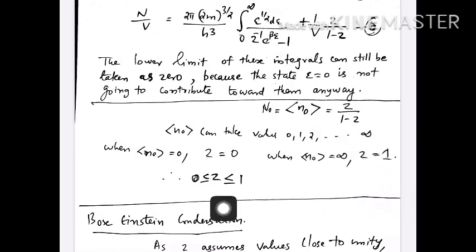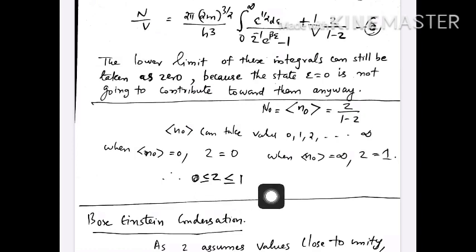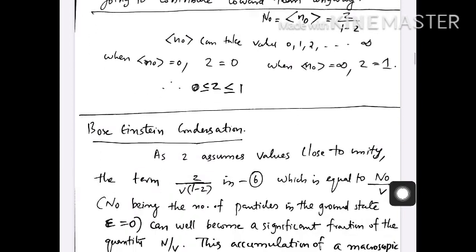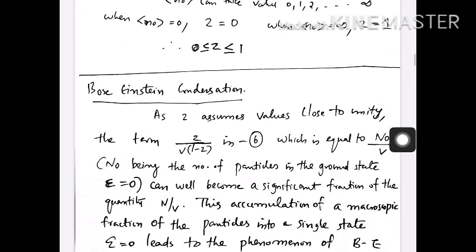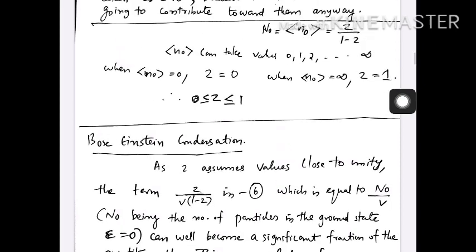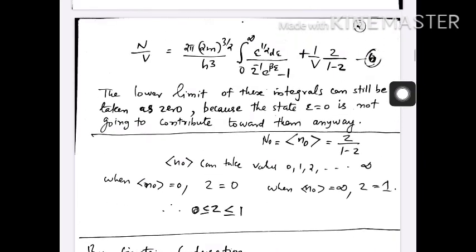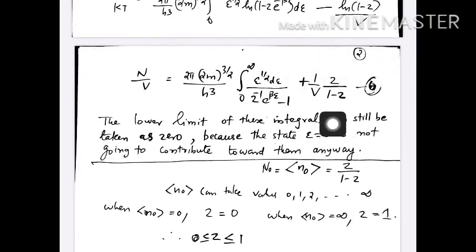We get an important relation: the fugacity z for an ideal Bose gas varies between 0 and 1. The minimum value is 0 and the maximum value it can take is 1 — this we will apply later. As z assumes values close to unity, the term (1/V)·z/(1 minus z) tends to infinity as z tends to 1.